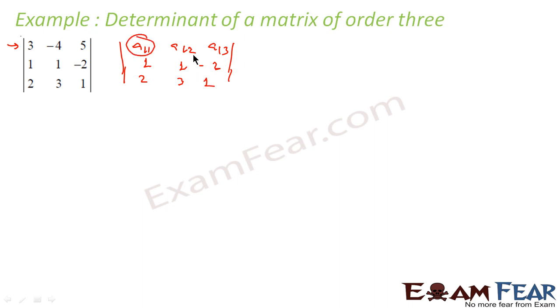So the second case I'll write here: a 1 1, a 1 2, a 1 3, 1 1 minus 2, 2 3 1. The second case I'll pick this, I'll delete these, and for the third case, I will pick this a 1 3 and I'll delete these, and I'll add all the values.